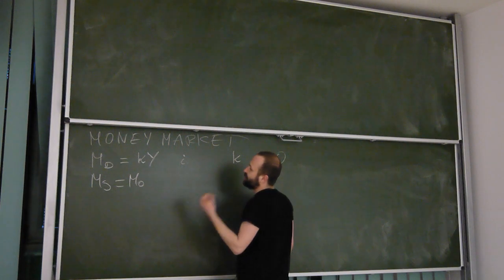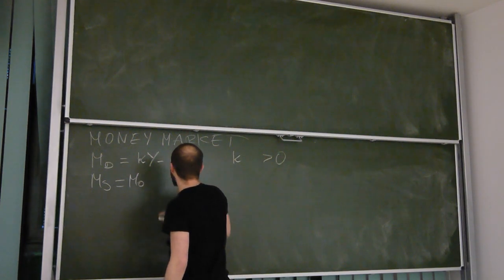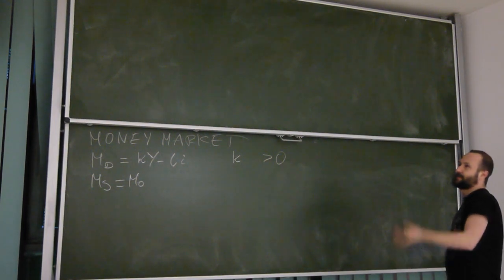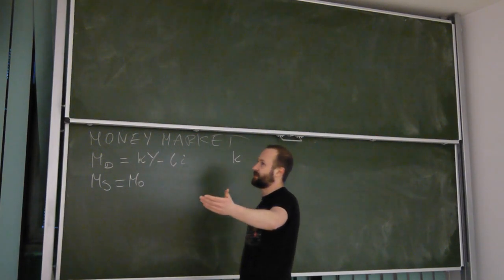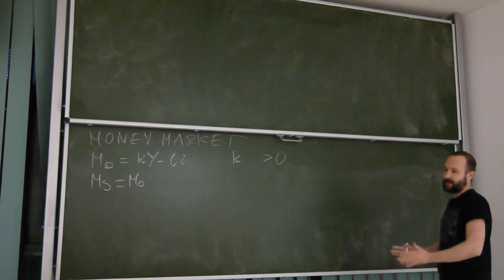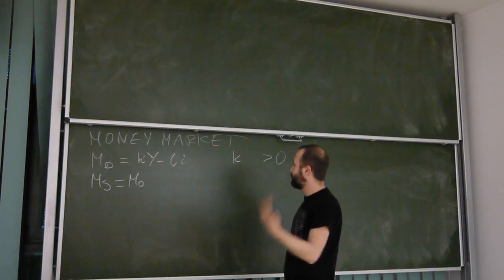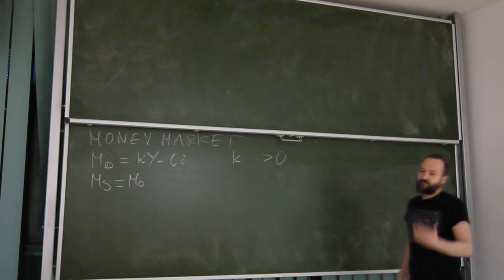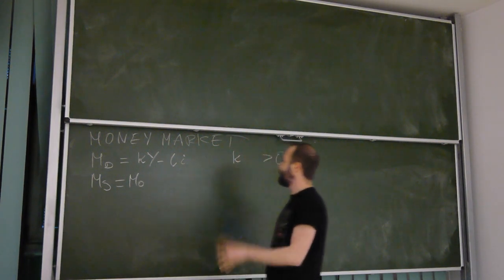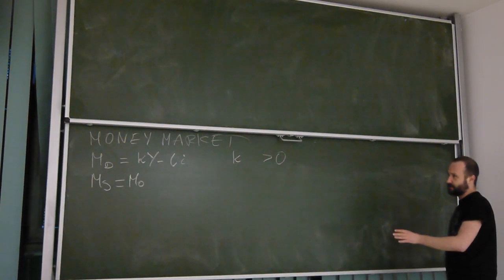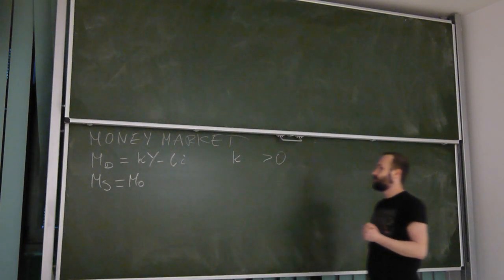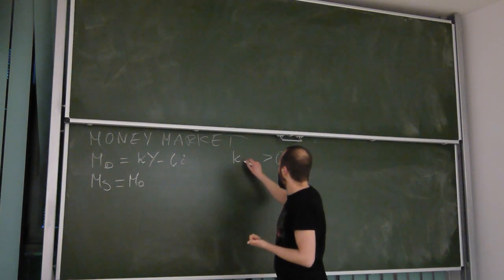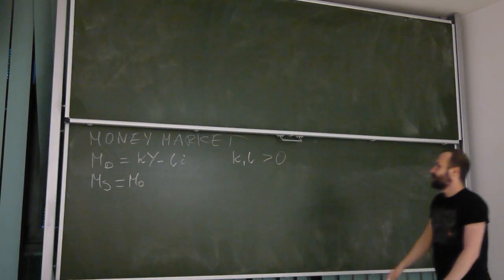Now the question is, should the relationship between money demand and interest rate be positive or negative? Look, this is a price, so in case of demand we expect negative relationship. It makes perfect sense. The higher is the interest rate, the less money. If you have $1,000 and interest rate in a bank is 10%, it means by not keeping this money in a bank you lose $100 over the period of a year. If the interest rate would be just 5%, it would mean that you are losing only $50 over the period of a year.